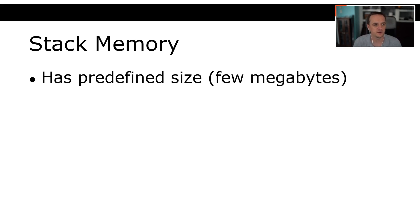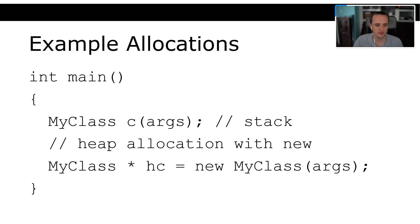Stack memory has a predefined size — typically just a few megabytes — and is used mostly for program code and local variable allocation. Any variables allocated on the stack are automatically destructed when they leave scope. So `MyClass c`, when we reach the closing bracket of its scope, the destructor for `c` is automatically called. That is not the case for heap-allocated pointers to a class — we'll see examples of that later.